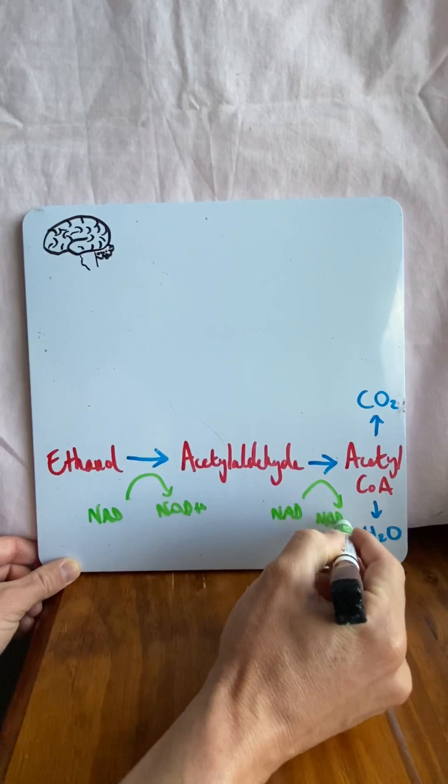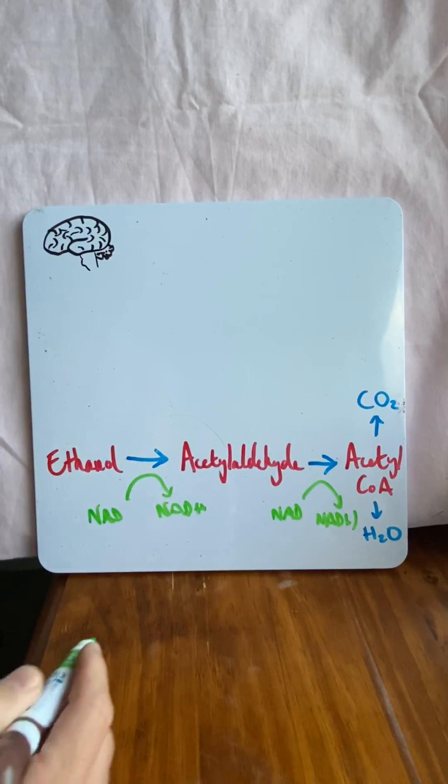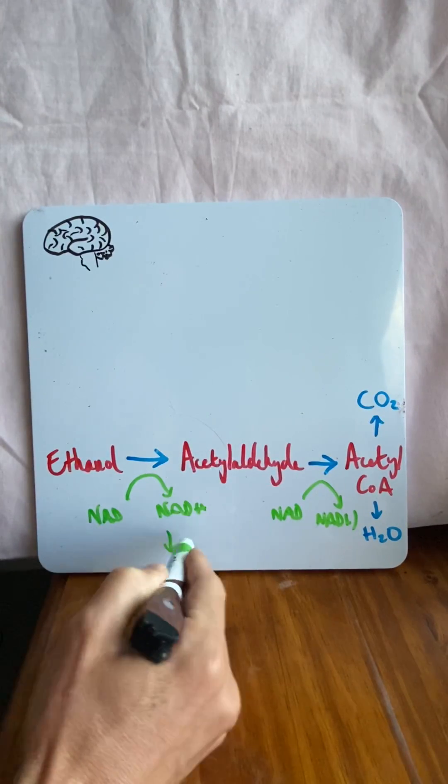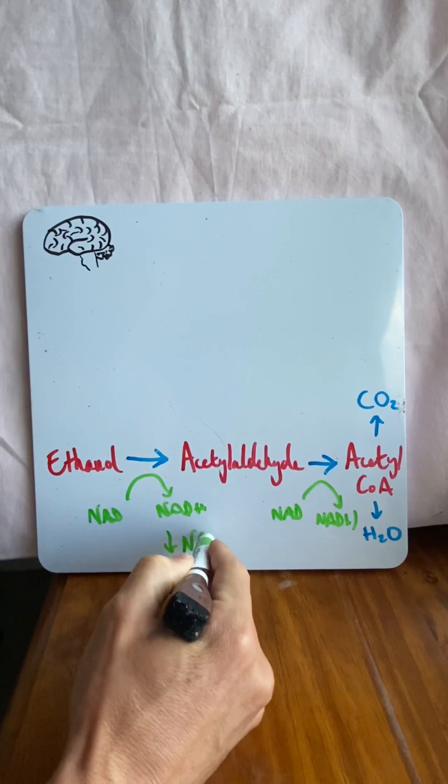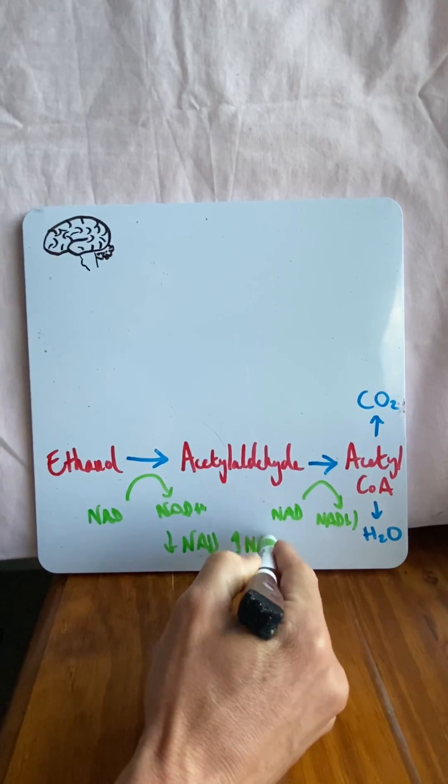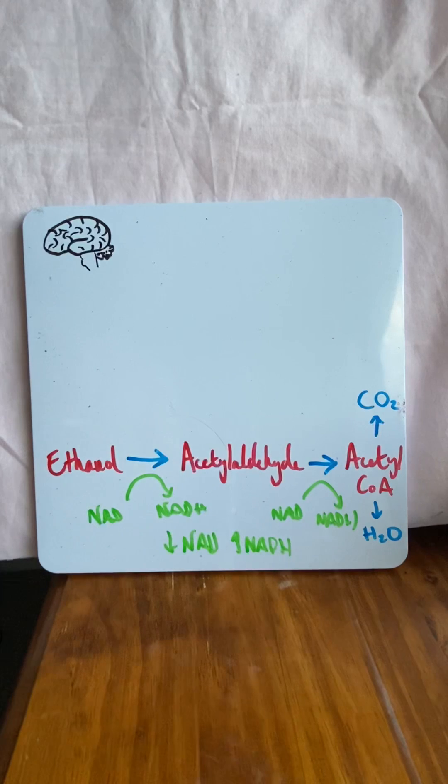Now what this ultimately means is while you're metabolizing alcohol, you end up reducing the amount of NAD available in the body and increasing the amount of NADH in the body. I'll tell you why this is important in a second.